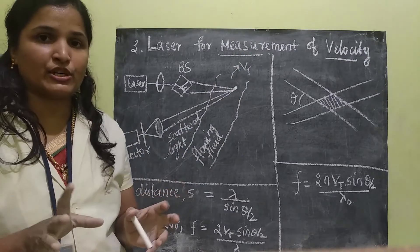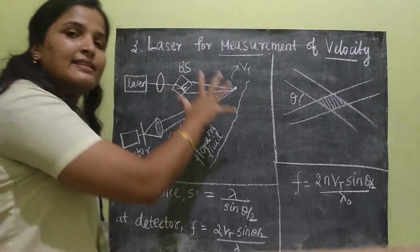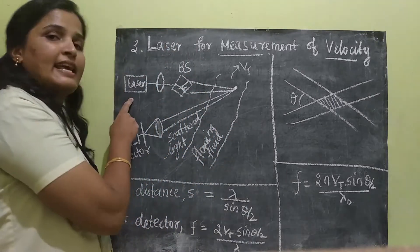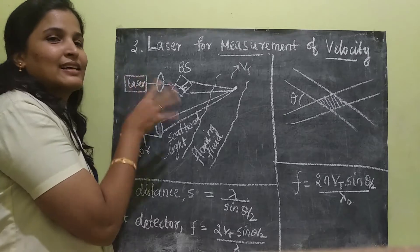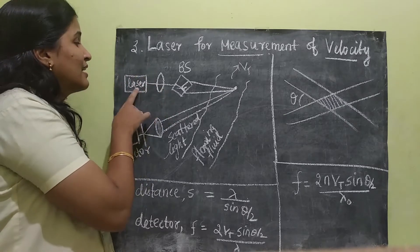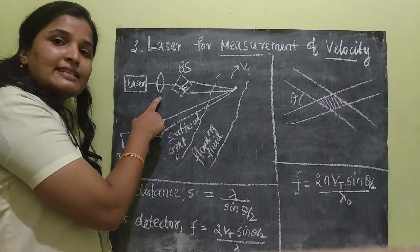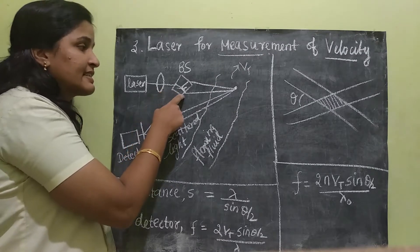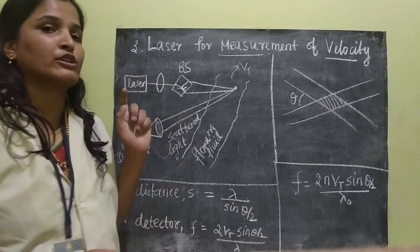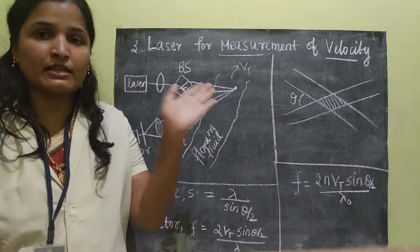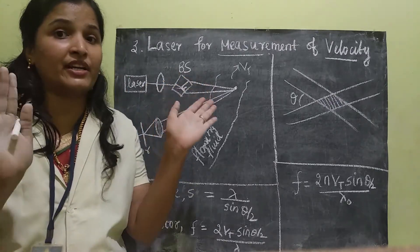Let us see the construction. This arrangement contains a laser source, which is very similar to the previous topic. It is focused to be parallel by using a lens and then given to the beam splitter. The beam splitter will split the beams into two, as we already know.